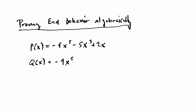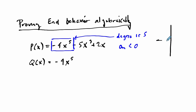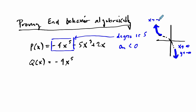First, let's establish what this polynomial is doing. The leading term tells us the degree is 5, and the leading coefficient is negative. So for an odd-degree polynomial with a negative coefficient, the end behavior looks like a flipped cubic: as x approaches positive infinity, y approaches negative infinity, and as x approaches negative infinity, y approaches positive infinity.